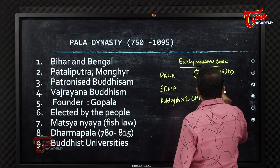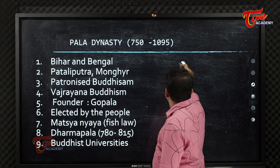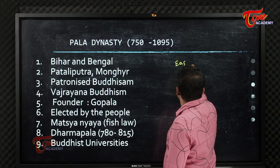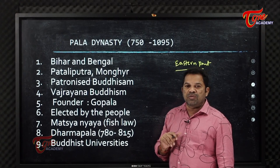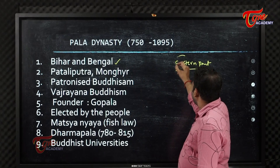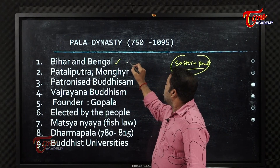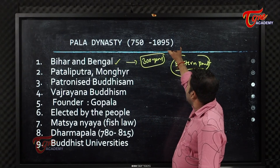The Pala dynasty ruled the eastern part of India. Rajputs ruled North India, Rashtrakutas ruled the Deccan, and Cholas ruled the South East. The Pala dynasty ruled Bihar and Bengal for around 300 years — from approximately 750 AD to 1095 AD.